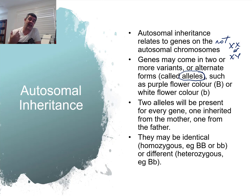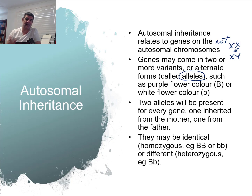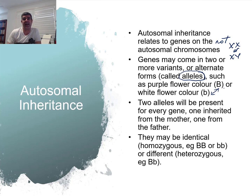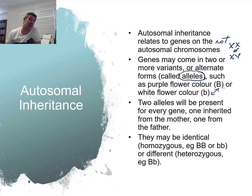Genes come in usually more than one form, and those different forms or variants we call alleles — a very important term we'll be using a lot. Alleles are variations. If you think about the color of the flowers — purple or white — we usually show these different alleles as particular letters, often uppercase and lowercase. There are particular reasons for that related to an important concept called dominance, which we'll look at in this video. You can use any letter you like, as long as you understand what they mean and include a key when solving genetic problems.